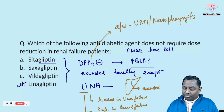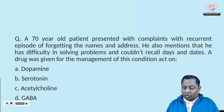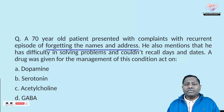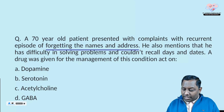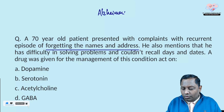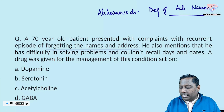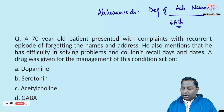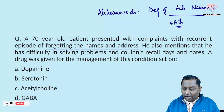The second question: a 70-year-old male presents with recurrent episodes of forgetting names and addresses, difficulty solving problems, and inability to recall — a classical case of Alzheimer's disease. In Alzheimer's disease, there is degeneration of cholinergic neurons, causing a deficiency of acetylcholine. The examiner is asking which drug is given for management of this condition.